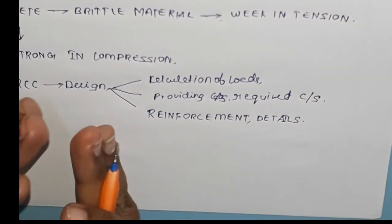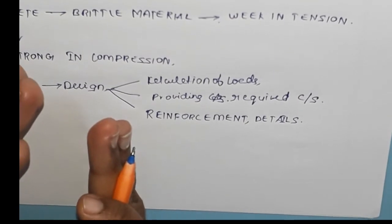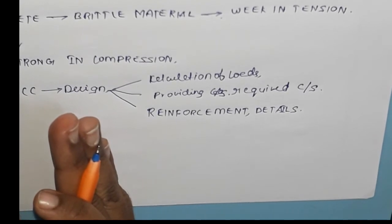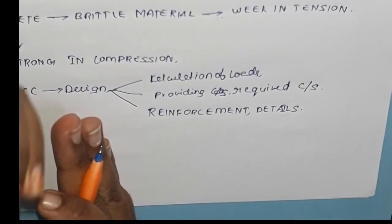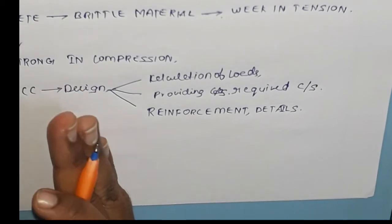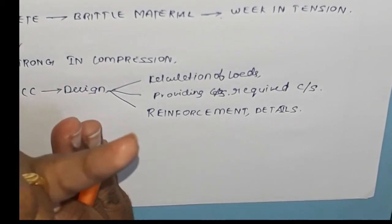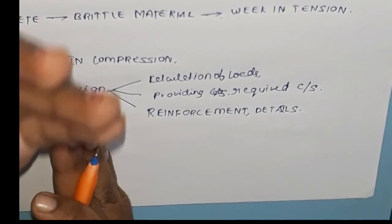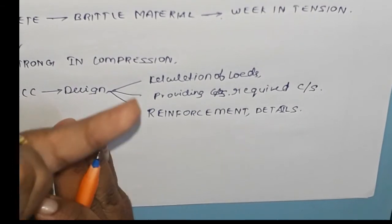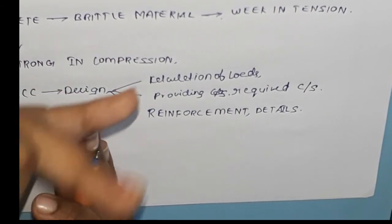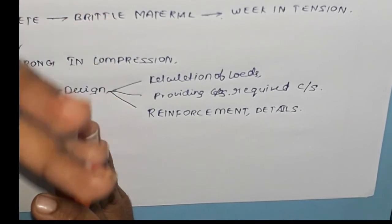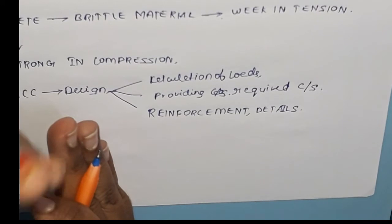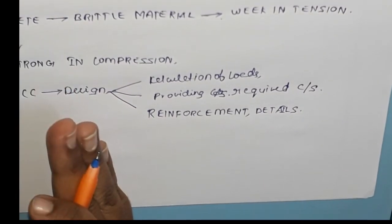If I want to build any structure, first I have to know what elements are required for constructing a building. For example, if I want to build a residential house, first I have to lay the foundation — within which we have footings and columns. Foundation is the basic requirement for any structure. After foundation we lay columns, beams, and slab — these are all components of a building.